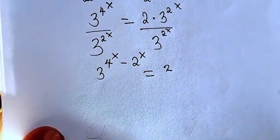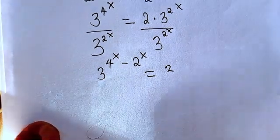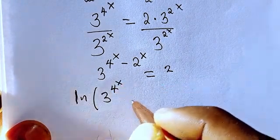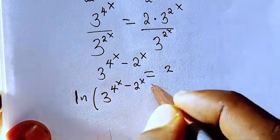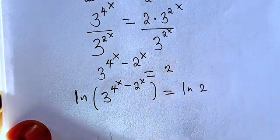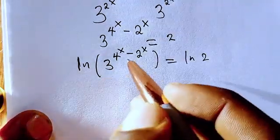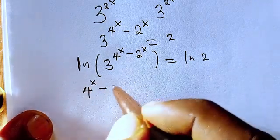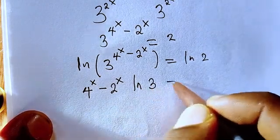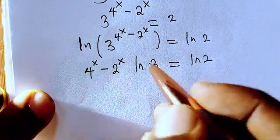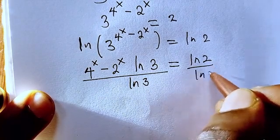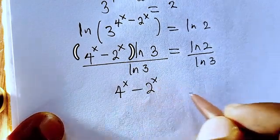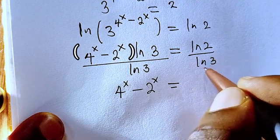Next, we introduce the natural logarithm to both sides: ln of 3 to the power of (4^x minus 2^x) equals ln of 2. Bringing the exponent down, we have (4^x minus 2^x) times ln 3 equals ln 2. Dividing both sides by ln 3 leaves us with 4^x minus 2^x equals ln 2 over ln 3.